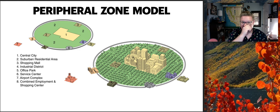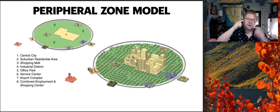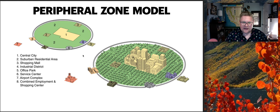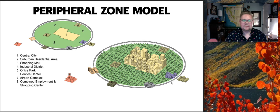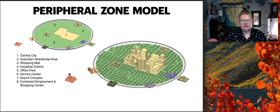The peripheral zone model is unique because public transportation wraps the entire community. You have your central city, then suburbia, surrounded by a ring of public transit. This connects shopping centers, office centers, service centers, airport complexes, and employment hubs. Los Angeles used to have something similar with the trolley car system — the red trolley enveloped the entire community and tied all the neighborhoods together.